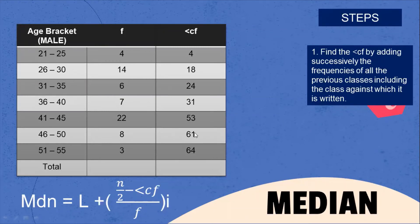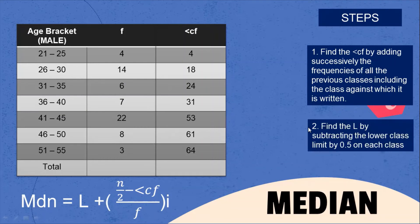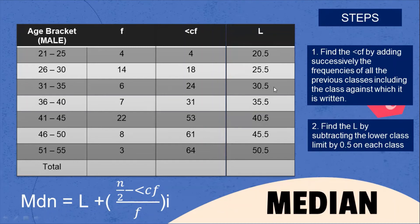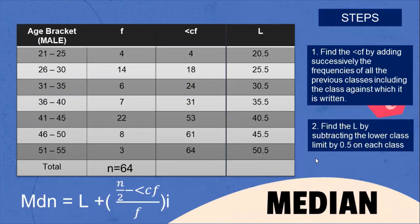Next, find the lower class boundary by subtracting the lower class limit by 0.5. Lower class limits: 21, 26, 31, 36, 41, 46, 51 become 20.5, 25.5, 30.5, 35.5, 40.5, 45.5, 50.5. The total N = 4 + 14 + 6 + 7 + 22 + 8 + 3 = 64.